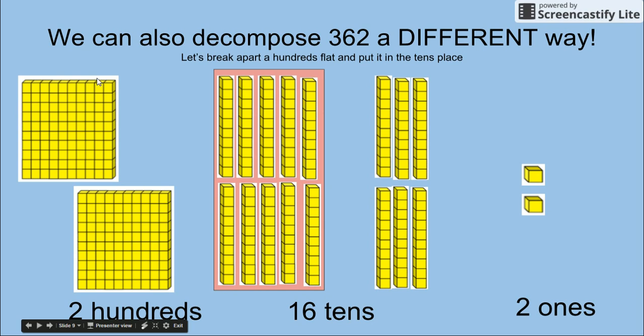We can also decompose 362 a different way. Let's break apart a hundreds flat and put it in the tens place. So previously we had three hundreds. We broke it apart and moved it over here. Now we have two hundreds, 16 tens, and two ones.